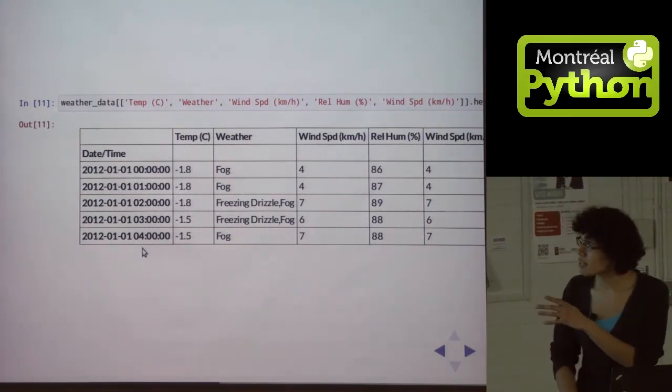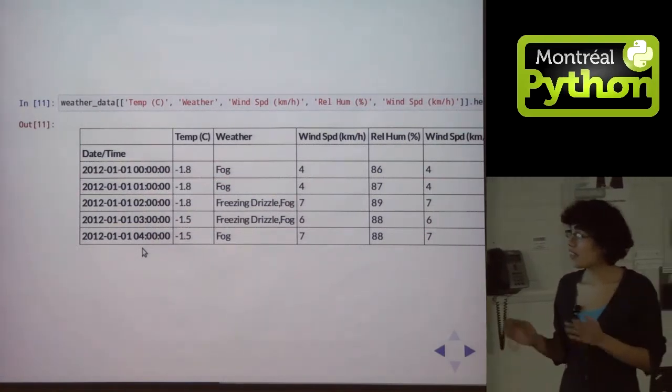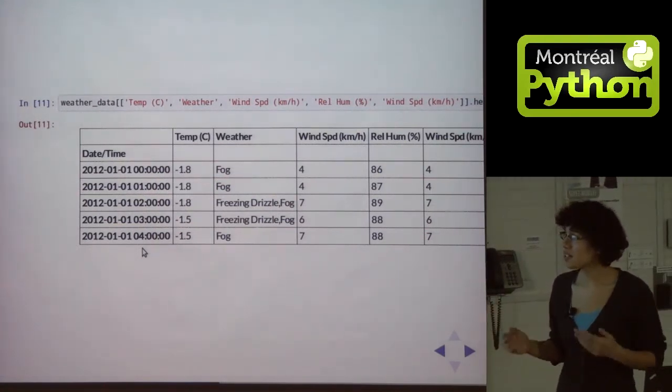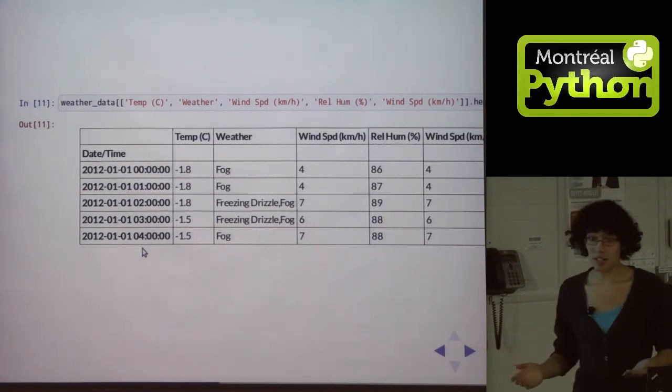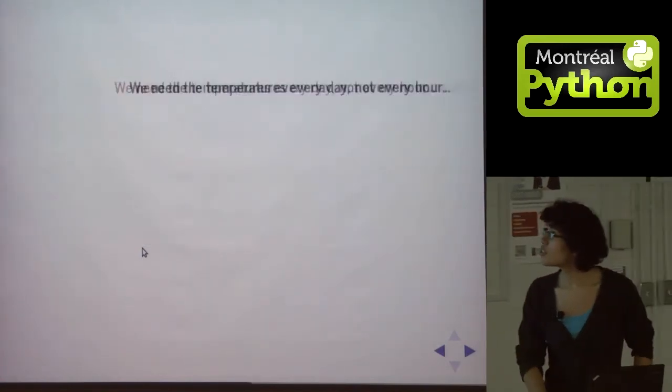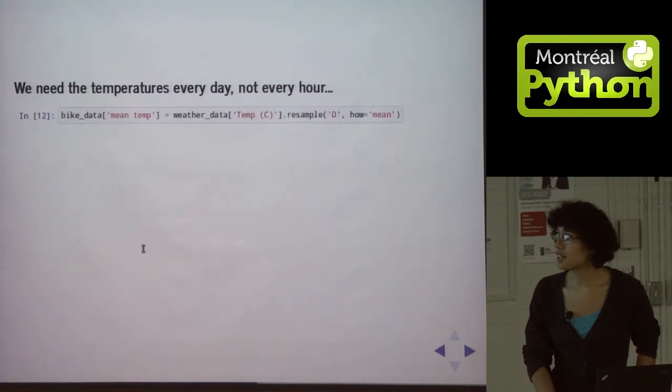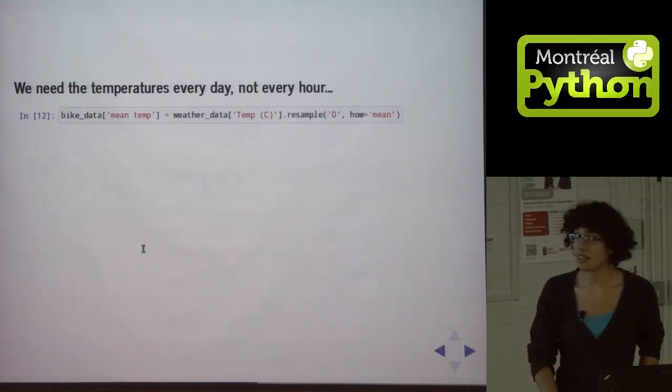The only problem is that our bike data was every day, and this weather data we have every hour, which is great, but it's not what we need. So because Pandas was written for dealing with time series data, it's really good at this.